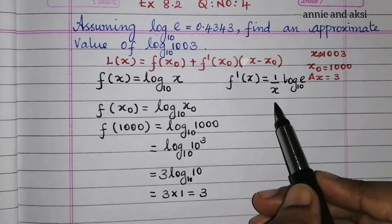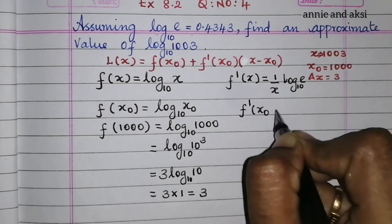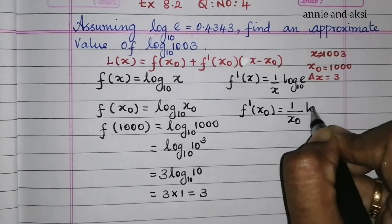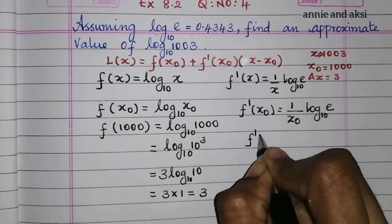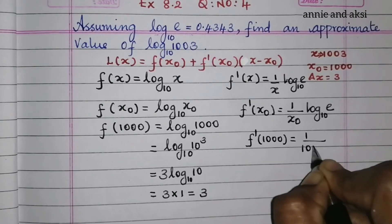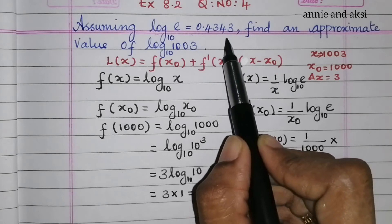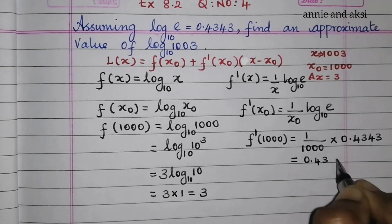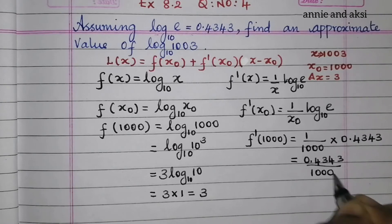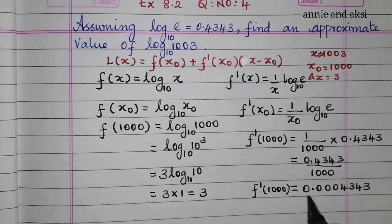Now, f'(x) = (1/x) · log e to the base 10. Therefore f'(x₀) = f'(1000) = (1/1000) · log e to the base 10. Substituting the given value 0.4343, we get f'(1000) = 0.4343 / 1000 = 0.0004343.